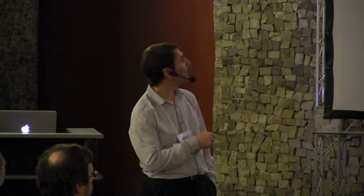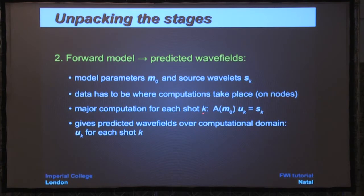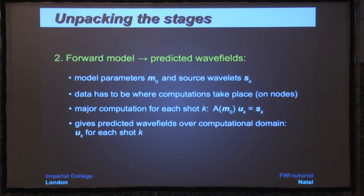Stage two is the forward model. We take the model parameters and source wavelets — which must be in RAM on the nodes — and perform a matrix solve: a matrix depending on the initial model M, with the source wavelet on the right-hand side. This gives us predicted wave fields U_K over the computational domain for each shot. In the frequency domain this is a Helmholtz operator; in the time domain it involves time stepping.